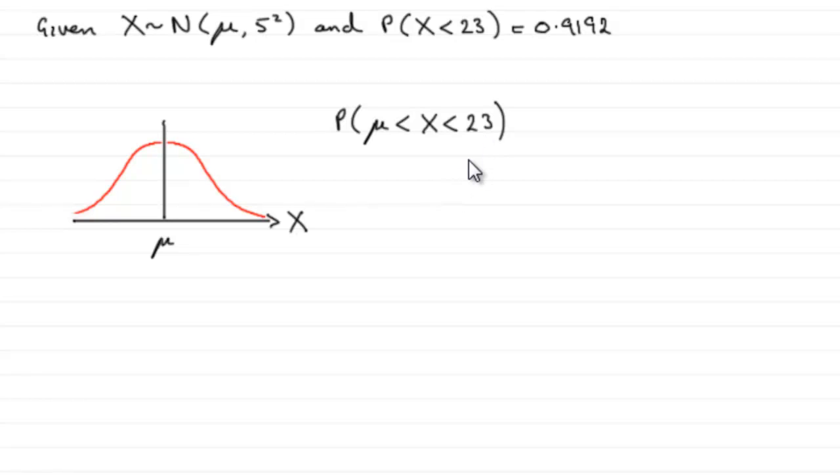This is very easy because we know already that 23 lies over here, and if this is the value where X equals 23, we know this area all the way back, that probability is given by that area there, 0.9192. And we know this area to the left of mu is going to be a half.